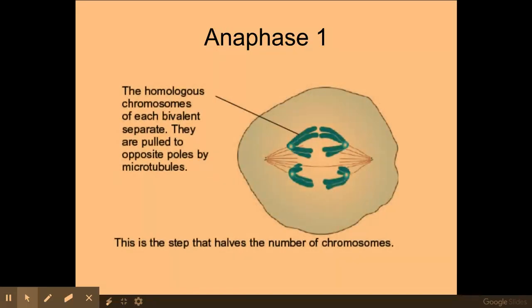So the next phase is anaphase 1, and this is where the bivalents are pulled apart by the spindle fibers contracting, pulling the chromosomes to the opposite poles of the cell. Now this is a step that halves the genetic information within the cells.